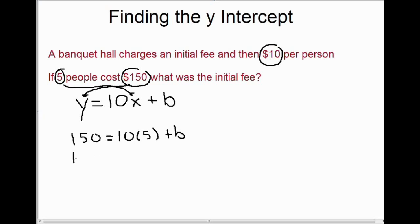Well now if we simplify this, 10 times 5 is 50. And we're trying to find out what that initial fee was, what the y-intercept was, so I want to isolate b here. So we'll bring 50 over to the other side, and it's a positive on this side, so it has to become a minus on the left side. And that equals positive b. Positive b is just the same as b. And 150 minus 50 is 100. So what that tells us is, for this question, the banquet hall charged an initial fee of $100. And then it cost $10 per person. So those 5 people cost $50 plus the $100 initial fee, so that's why the total cost was 150.